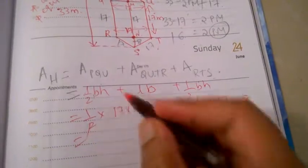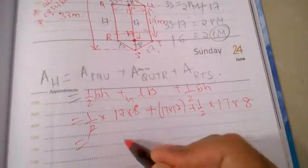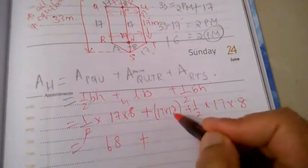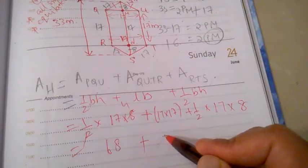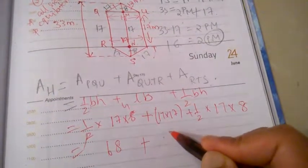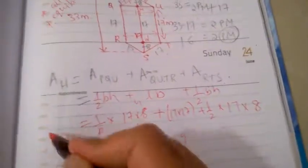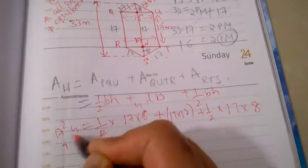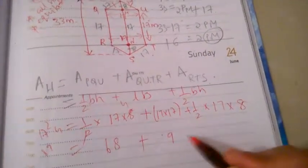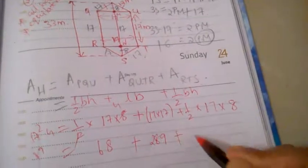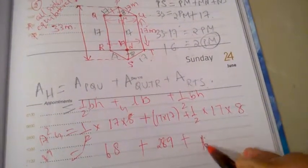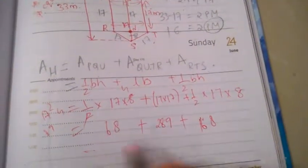Now let's do it. Half into 17 is 68 plus 17 squared. 17 squared is 289 plus 17 into 4 is 68. On adding this we will get the area of the full hexagon: 425 square meters.